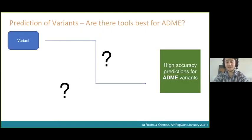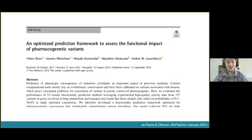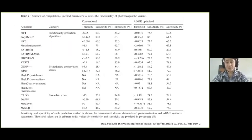We were wondering what tools are best for ADME variation. The nature of ADME genes is unique in that we understand them by how they're involved with drugs we use today, but they may not have had the same evolutionary pressures as other genes used to build the tool models. These researchers developed an optimized framework — a selection of tools and adjustments — to best assess ADME variation, looking at true positive and true negative ADME variants.